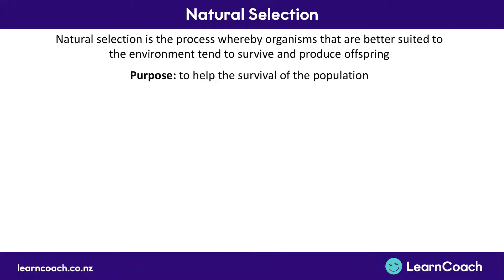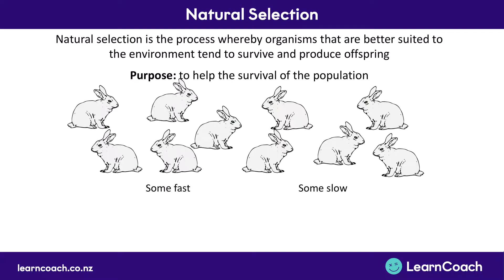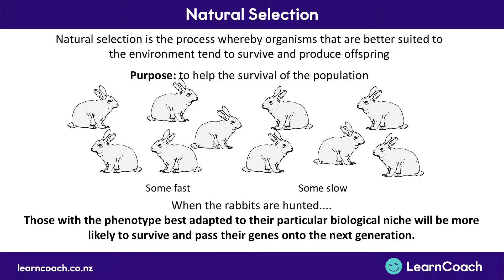And so if the ones more likely to survive have offspring because they're not dead, then overall that population will get stronger and stronger. The purpose of natural selection is to help the survival of a population. For example, if we had a population of rabbits — some are faster and some are slower — and hunters like wolves or hawks came along, then it's more likely that the slower rabbits would be eaten instead of the faster ones.